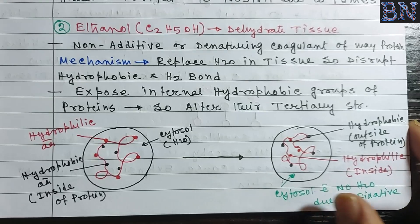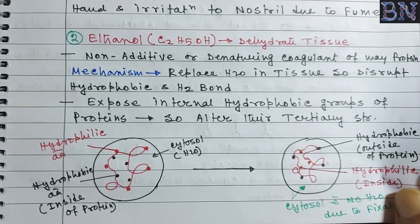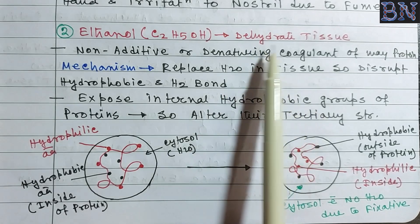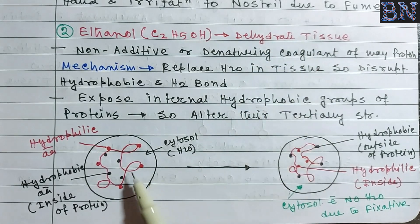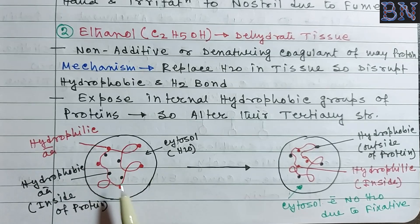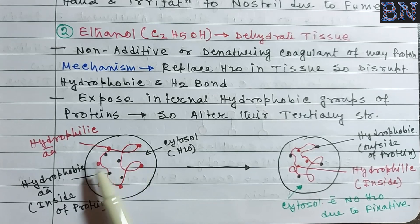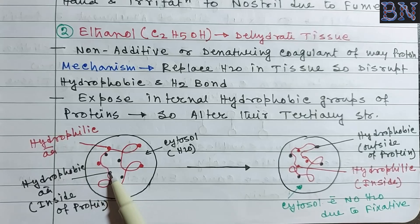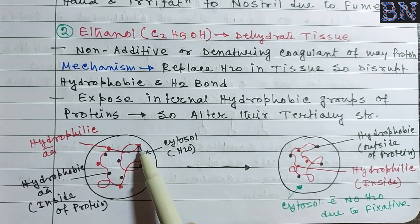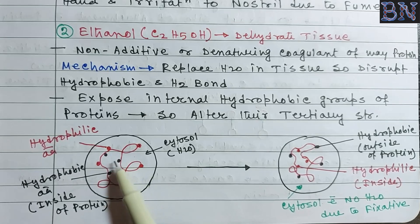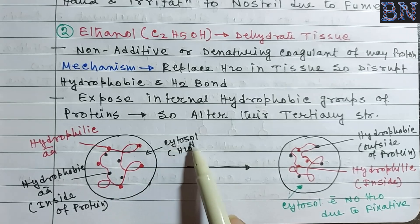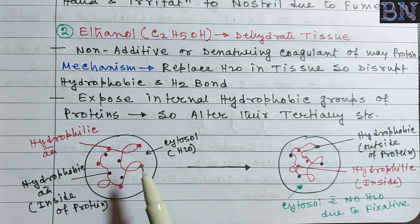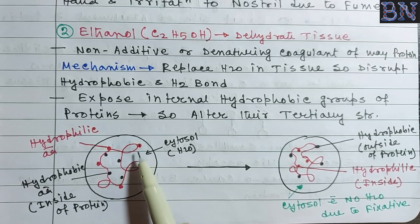The second type of simple fixative is ethanol. Alcohol primarily acts by dehydrating the tissue — it draws water out of the tissue. Within the cell, the proteins mainly have amino acids: hydrophilic amino acids and hydrophobic amino acids. Hydrophilic amino acids interact with water, while the cytoplasm contains hydrophobic amino acid components as well.